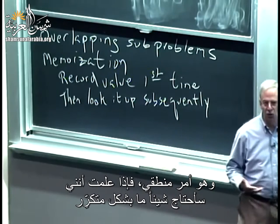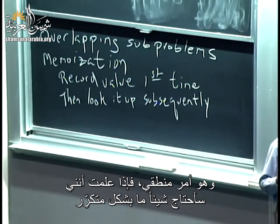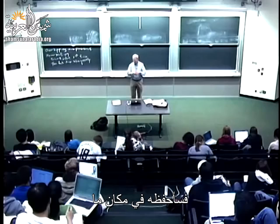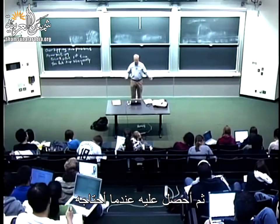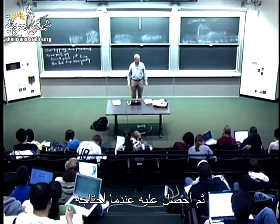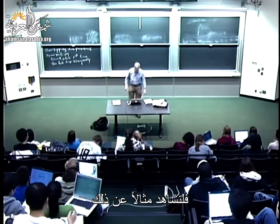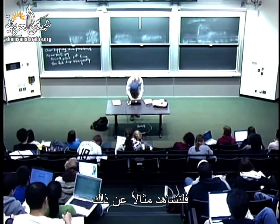That will lead me to use a technique I mentioned last time called memoization. Effectively what that says is: we record a value the first time it's computed, then look it up the subsequent times we need it. If I know I'm going to need something over and over again, I squirrel it away somewhere, and then get it back when I need it.